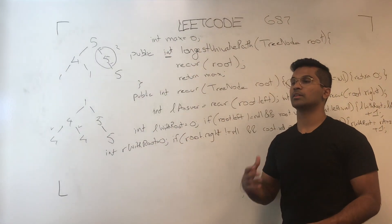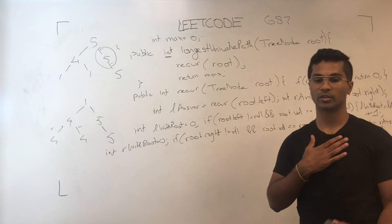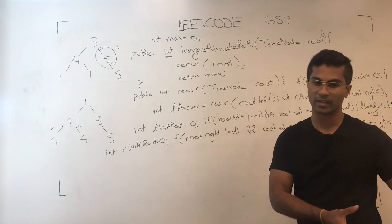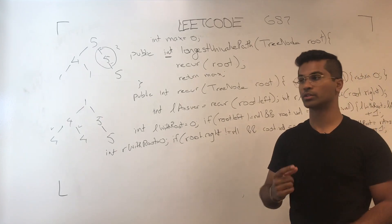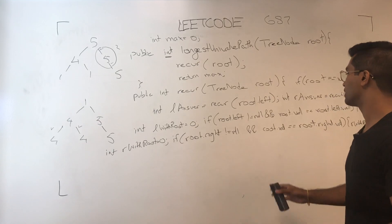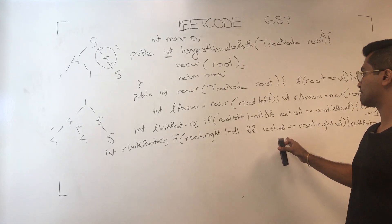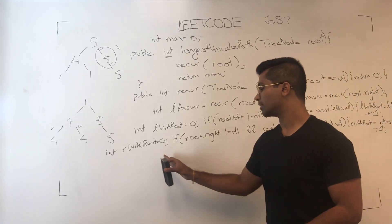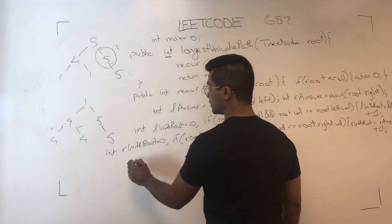What this basically means is: am I the same value as my left child? If so, let me take the recursive answer I got from it and add 1 to it. Same thing with the right child.